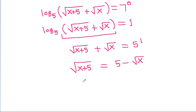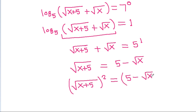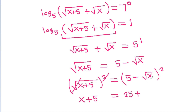Now, square root of (x plus 5) plus square root of x equals 5 minus square root of x. So square root of (x plus 5) equals 5 minus square root of x. Squaring both sides: x plus 5 equals 25 minus 10 times square root of x plus x.